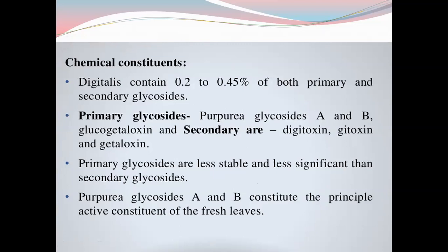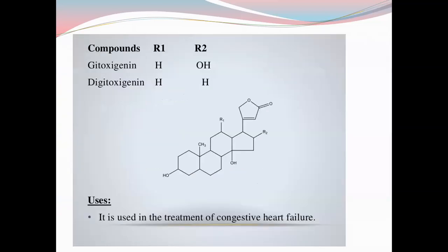The secondary glycosides — digitoxin, gitoxin, and gitaloxin — are stable and active. The structure is called cardenolides and bufadienolides, which are the major digitalis glycosides. This is a cyclopentanophenanthrene ring, a four-membered ring, with a lactone ring attached to it. The different compounds have a similar structure.